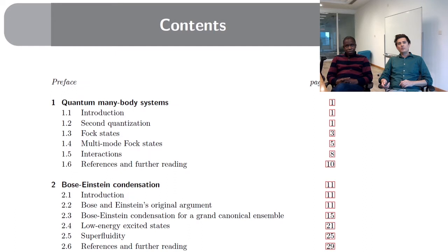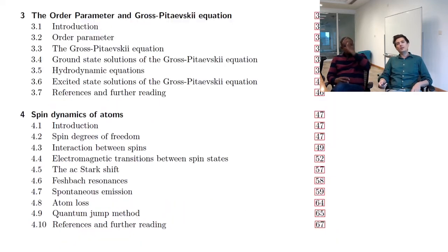So this is the contents page. It starts off by talking about just basics of how you actually write down the formalism for quantum many body systems, bosonic operators, and how you capture interactions between them. And then we go on to talking about Bose-Einstein condensates. How do Bose-Einstein condensates form? What are the low energy excited states, Bogoliubov excitation, superfluidity, this kind of thing.